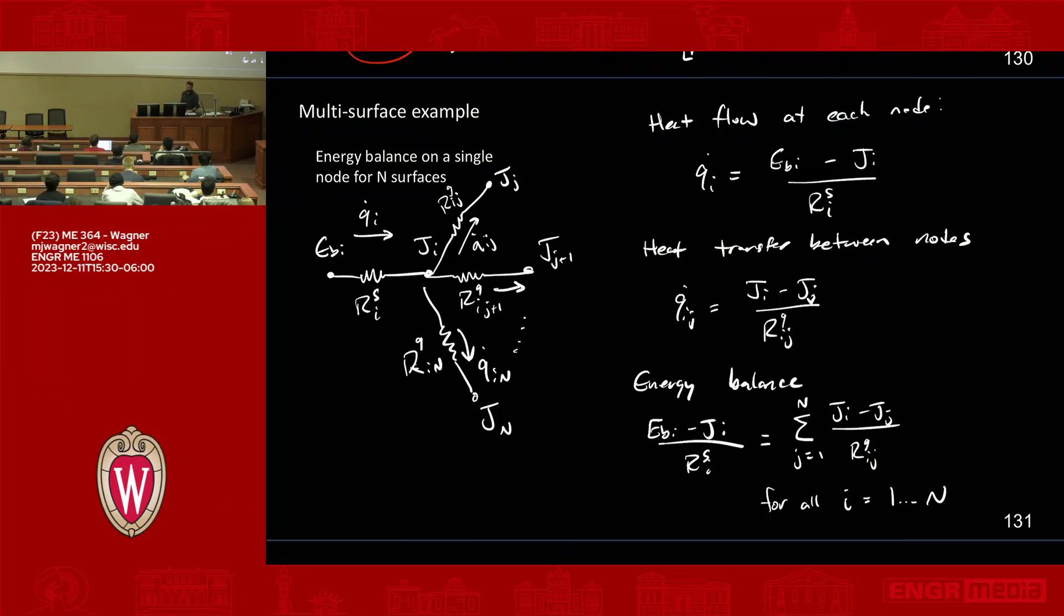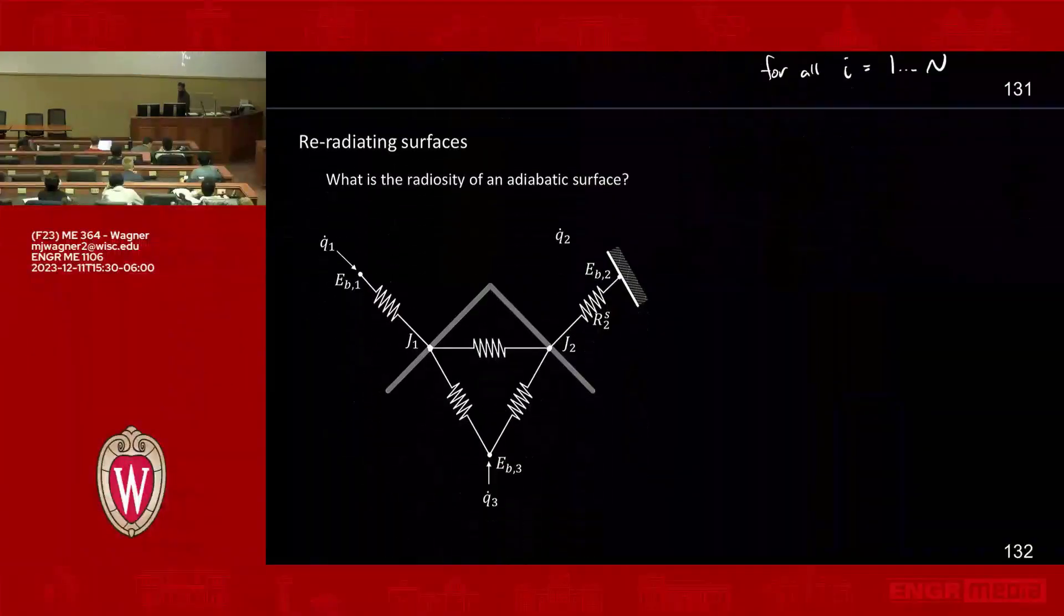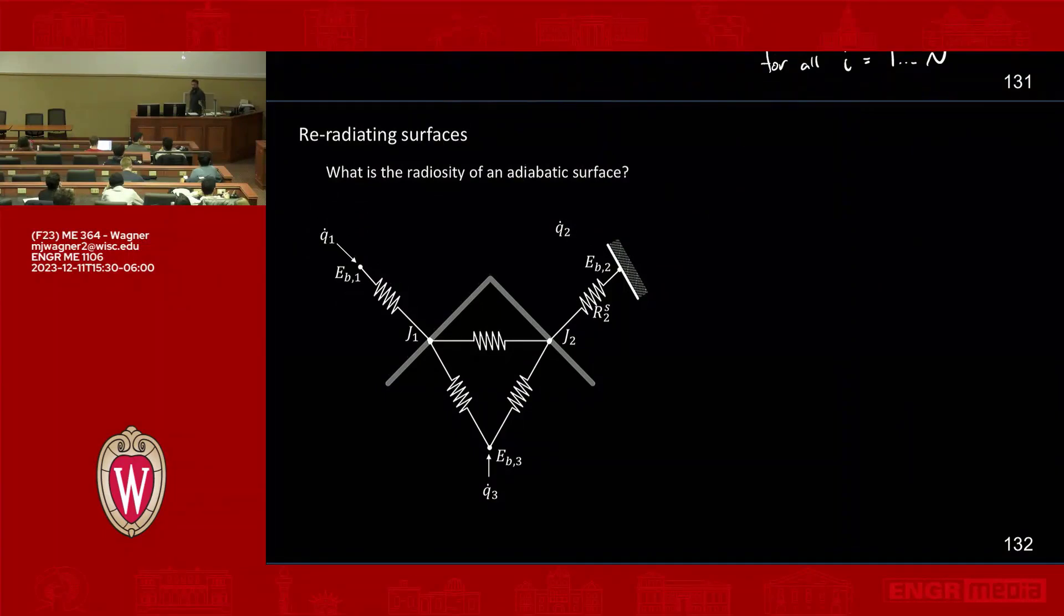One other really quick note. I think I can go through this very quickly. What happens when you have an adiabatic surface? This is kind of helpful. It gives you a perspective on what's actually physically happening with radiosity. So let's revisit our problem. But instead of allowing heat to flow out through Q dot 2, let's arbitrarily say this surface here is zero. It's adiabatic. There's zero heat transfer out of node 2. So how does that change our problem?